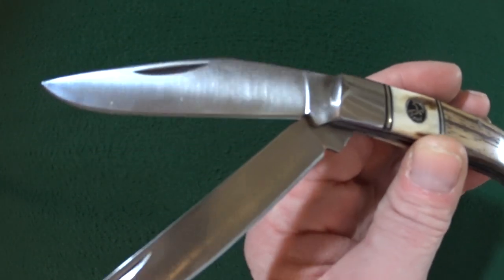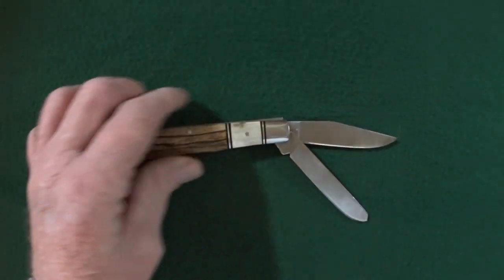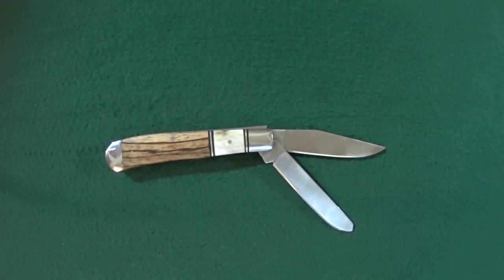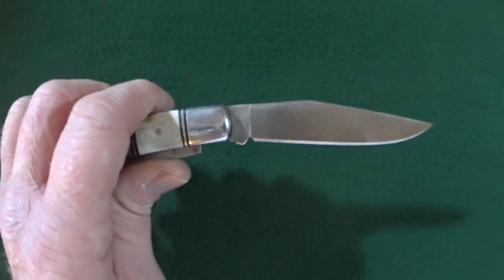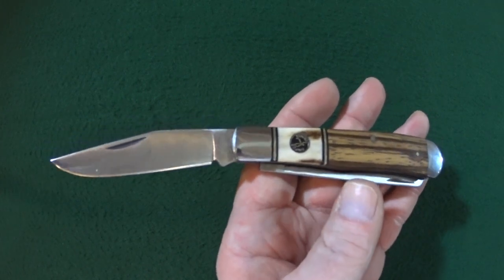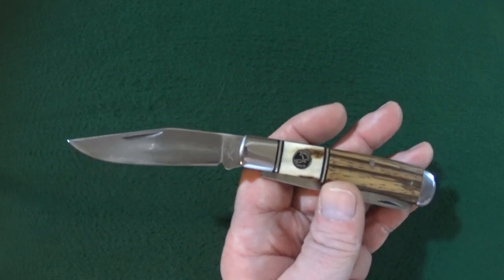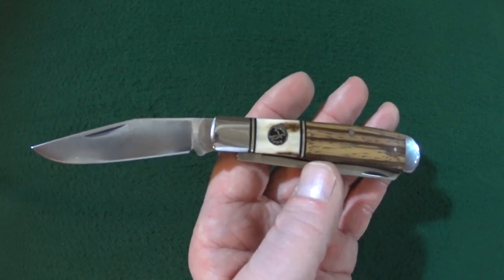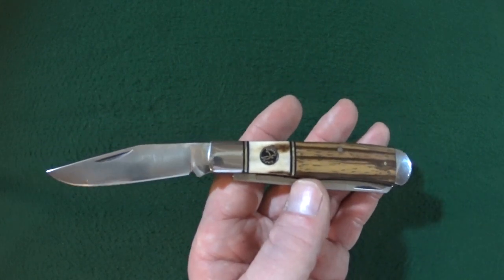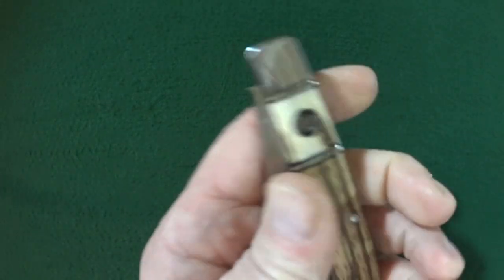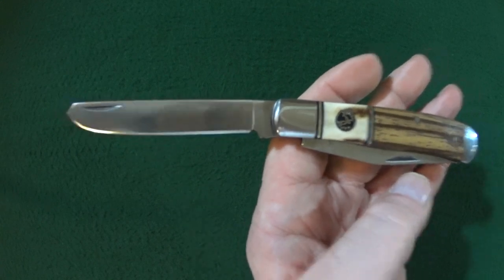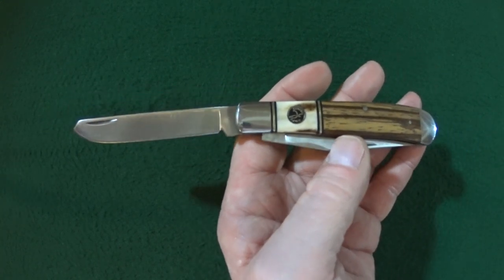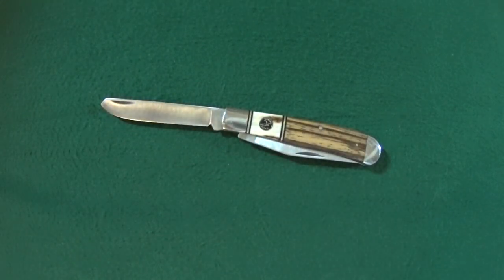Unfortunately, neither blade can be pinched open, so you actually have to use the nail-nick. One of the reasons for that is because on a scale of 1 to 10, 10 being the most difficult to deploy, my example of the Laredo is an 8 for the walk of the primary blade. The secondary blade is just a little bit easier with a walk rating of about a 6.